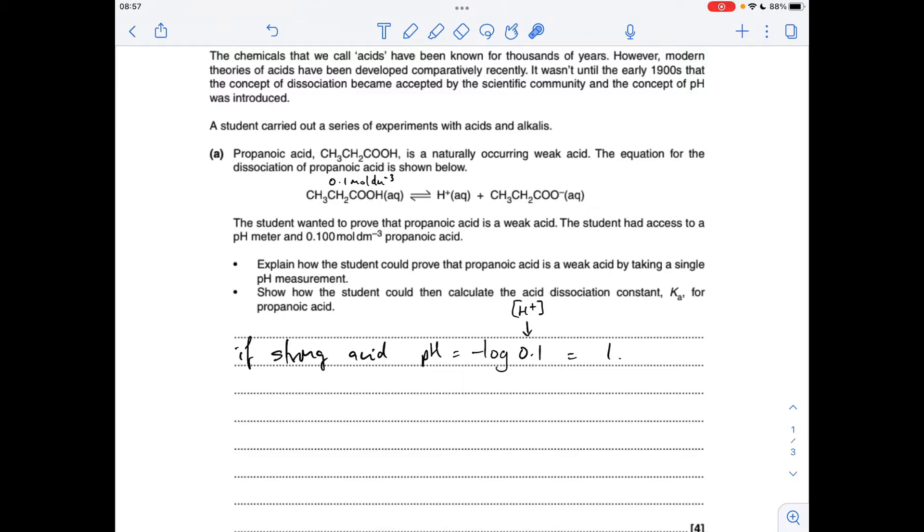So to prove that this is a weak acid, all we've got to do is take the pH. If it's greater than 1, that means the H+ concentration isn't as high as 0.1, and therefore it's not fully dissociated.